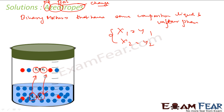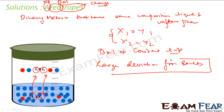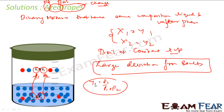Azeotropes have the same composition in liquid and vapor phase and boil at constant temperature. They show large deviation from Raoult's Law. As per Raoult's Law, x1 and y1 should be different — to find y1 you need p1 and p2, and y1 equals p1 divided by p1 plus p2. But if x1 equals y1, they are showing large deviation from Raoult's Law.